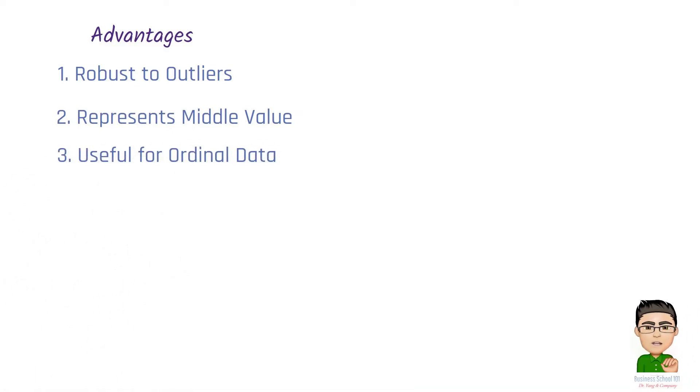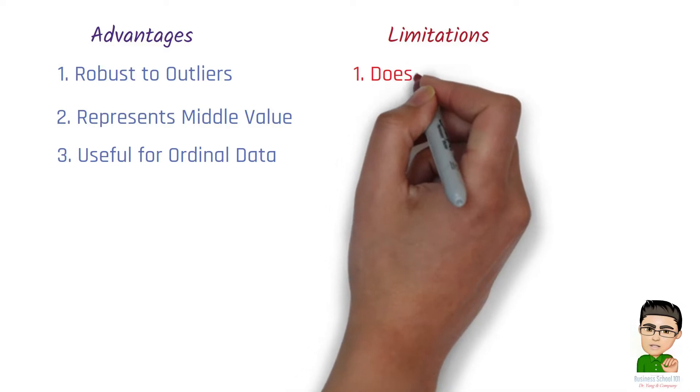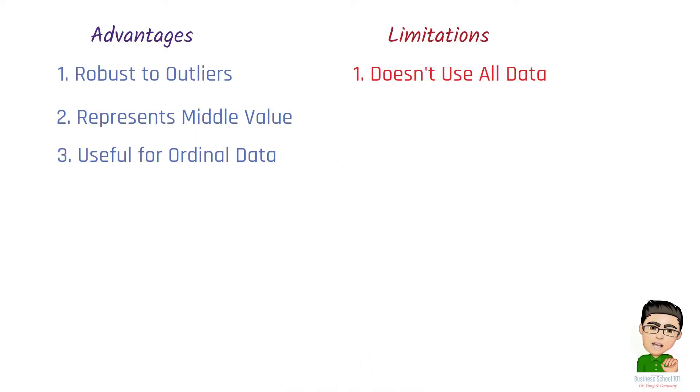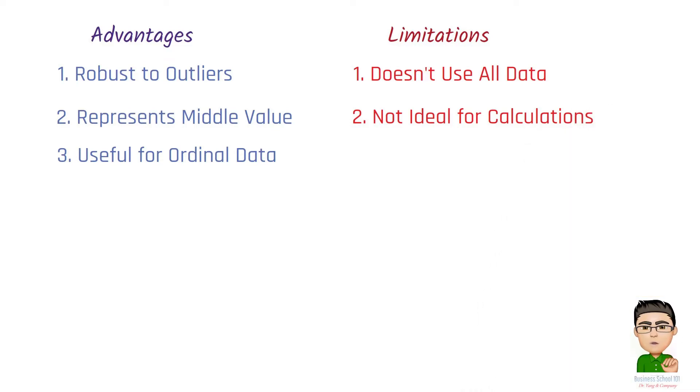Number 3, Useful for ordinal data. When dealing with ordinal data, such as rankings or survey responses, the median is often preferred. Limitations of median include: Number 1, Doesn't use all data. The median doesn't take into account the actual values of all data points, which may lead to some loss of information. Number 2, Not ideal for calculations. It may not be suitable for certain statistical calculations that require the actual data values.